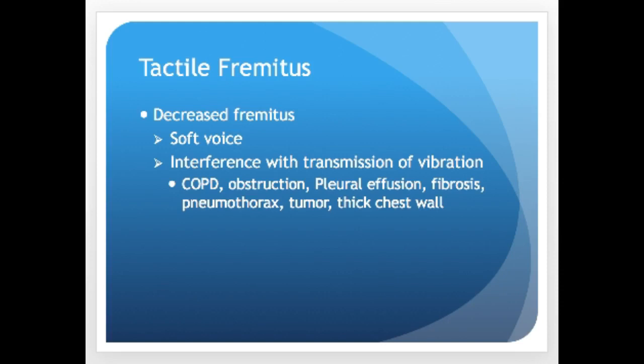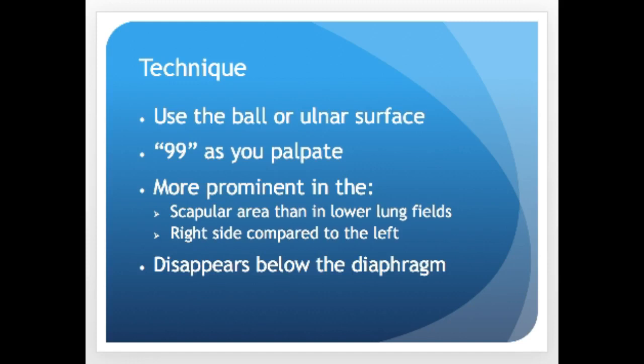Tactile fremitus refers to palpable vibrations transmitted through the bronchopulmonary tree when someone speaks. Feel for symmetry and quality — it should be equal on both sides. A very soft voice will make this hard to assess, so have the patient speak up. Conditions that interfere with transmission include COPD, obstructed bronchus, pleural effusions, fibrosis, pneumothorax, tumors, or a thick chest wall. Use the ball or ulnar surface of your hand and have the patient say '99' as you palpate. You shouldn't feel fremitus below the diaphragm.